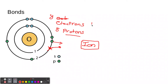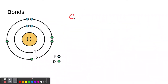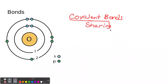Remember, electrons have a negative charge, and protons have a positive charge. Neutrons in the nucleus have no charge. If there are more electrons than protons, it'll be a negative ion. If it has more protons, it's a positive ion. So that's what an ion is. Now let's go back to a covalent bond. In covalent bonds, the key word is that they're sharing. In ionic bonds, there's no sharing - there's taking.